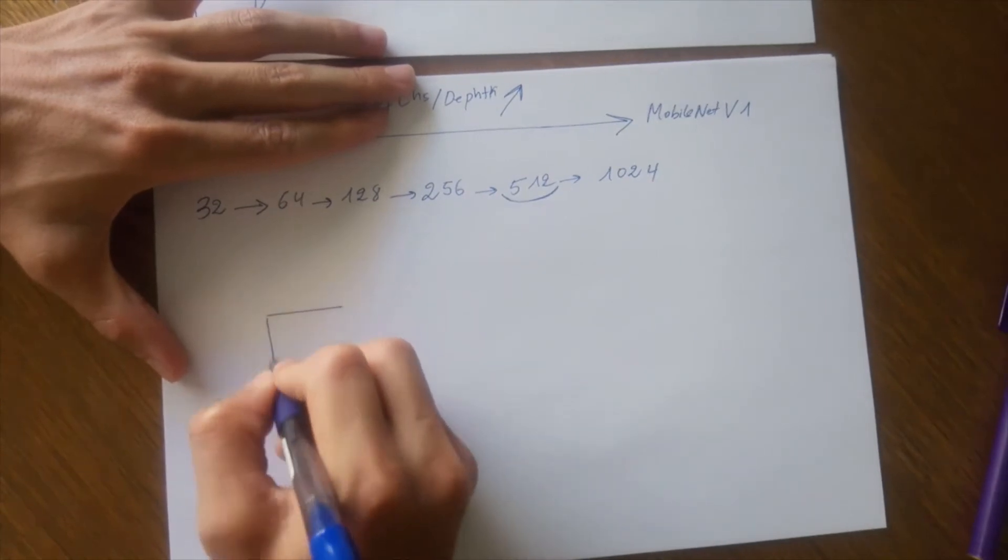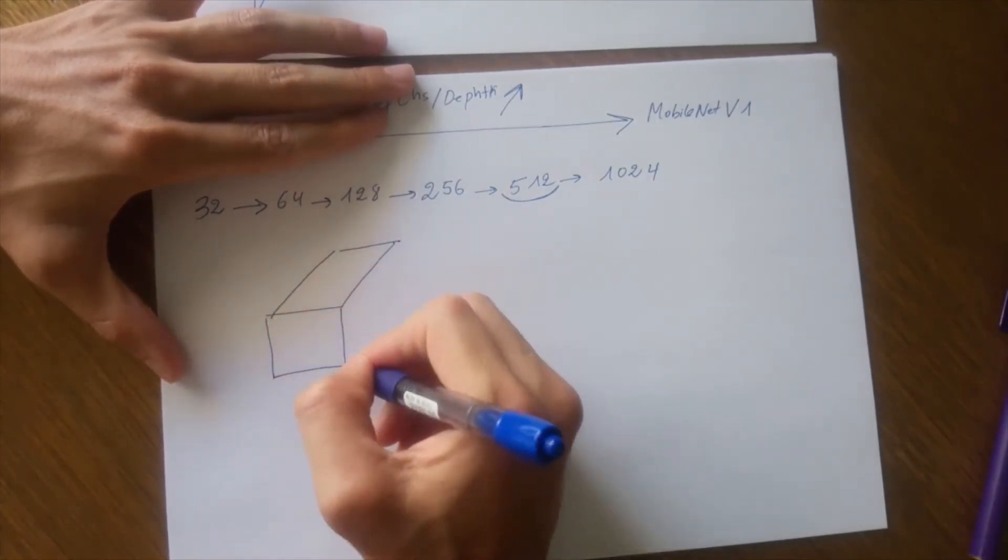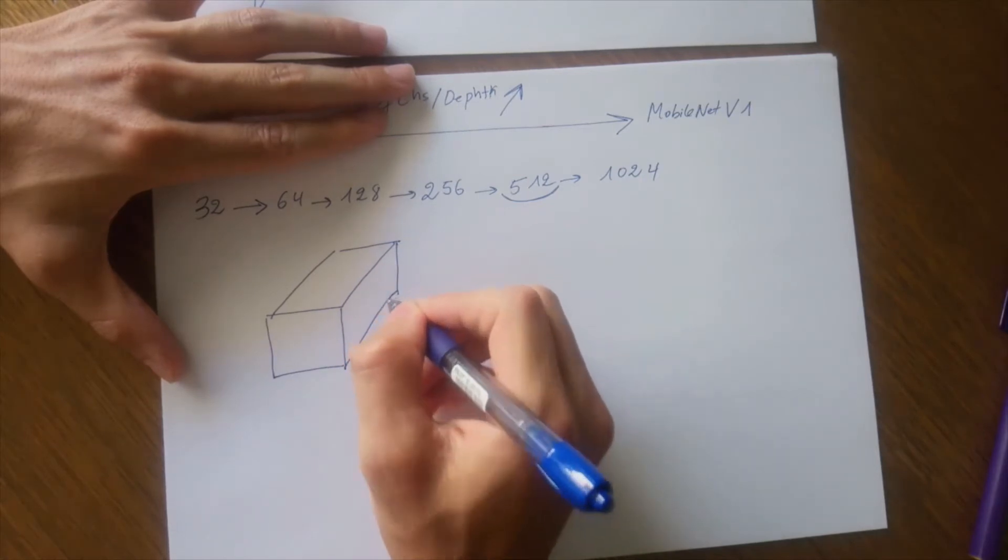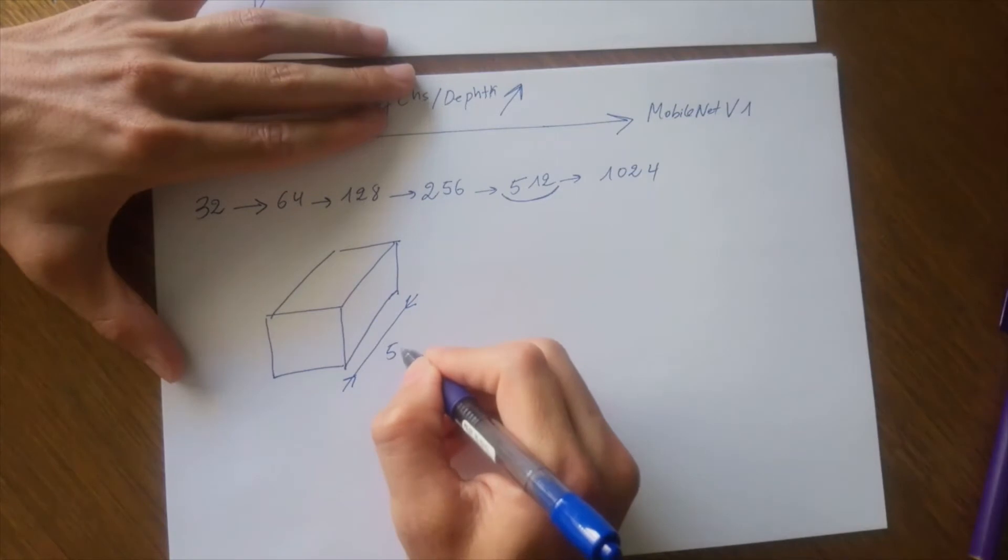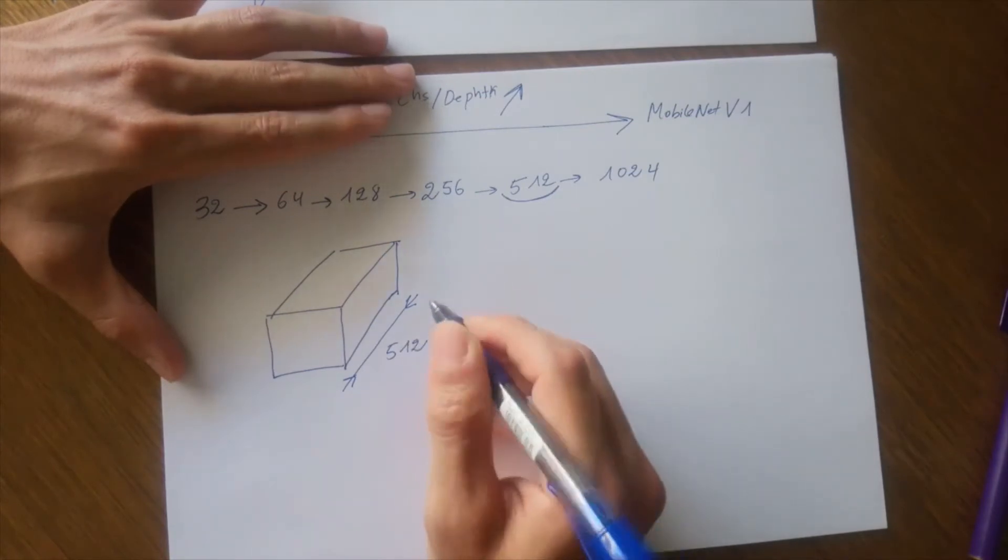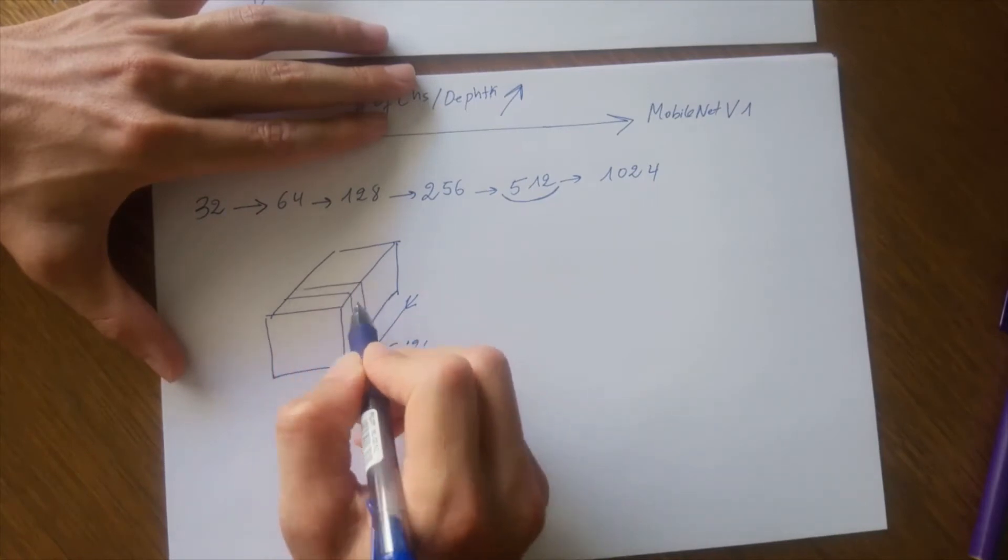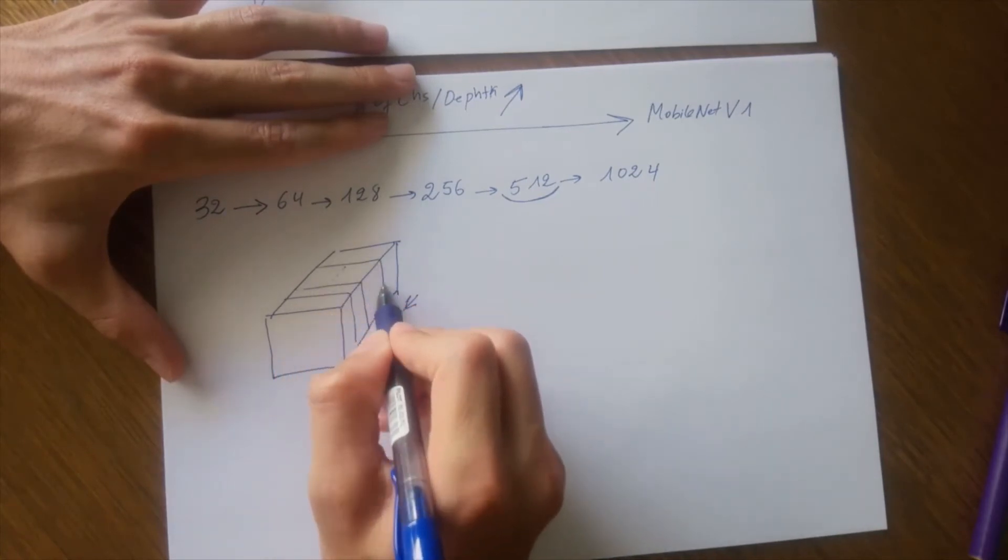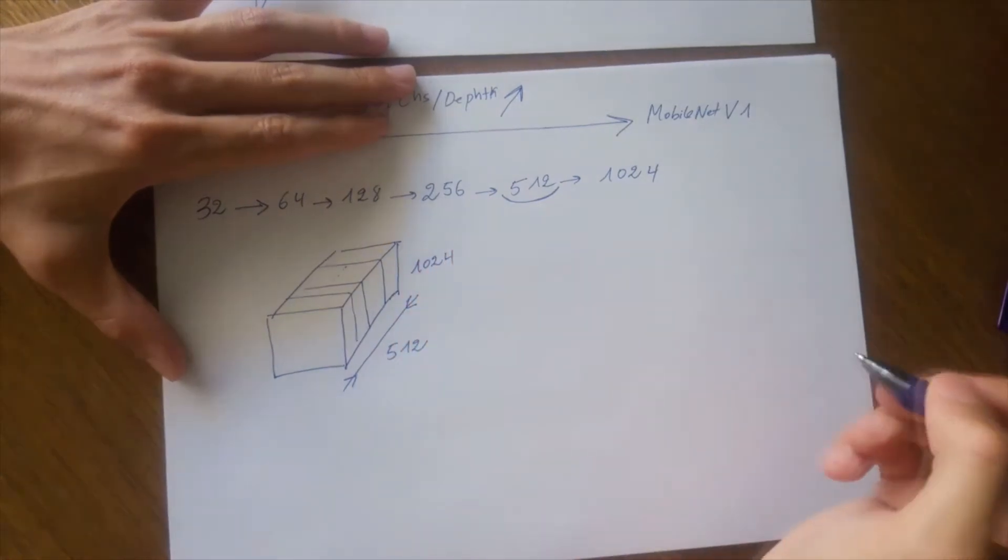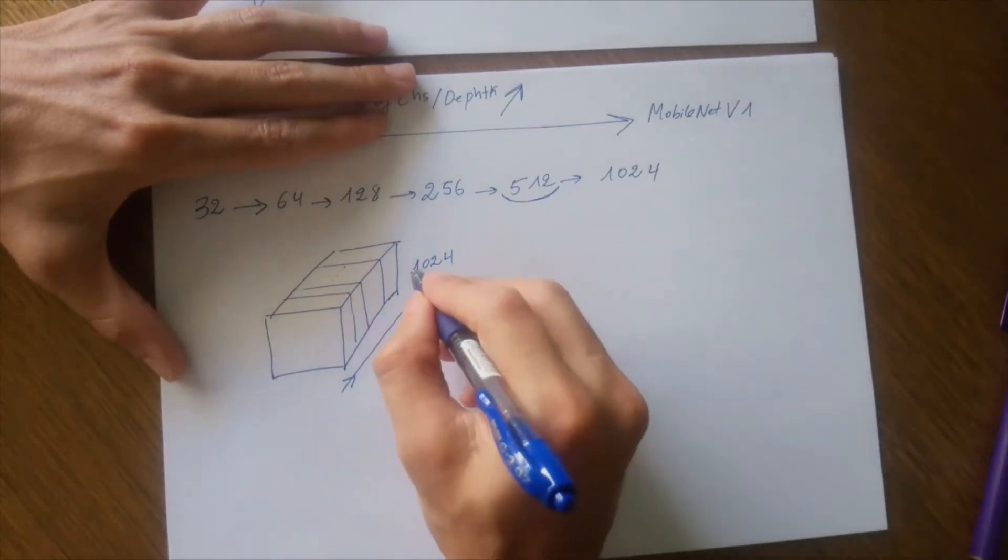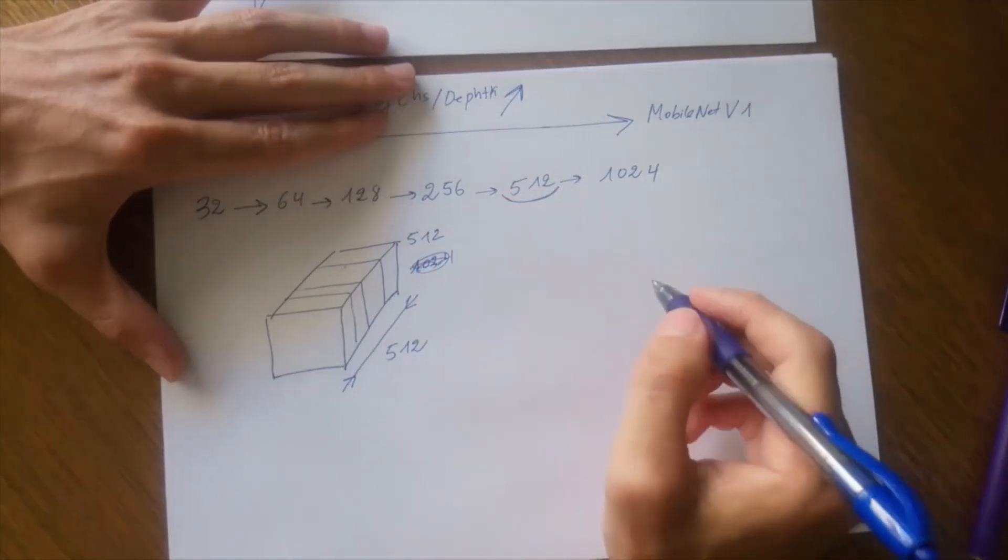So here I consider that I have an output with a depth that is equal to 512. So this is the depth or the number of channels, right? So we have one, two, up to 512. So this is the number of channels.